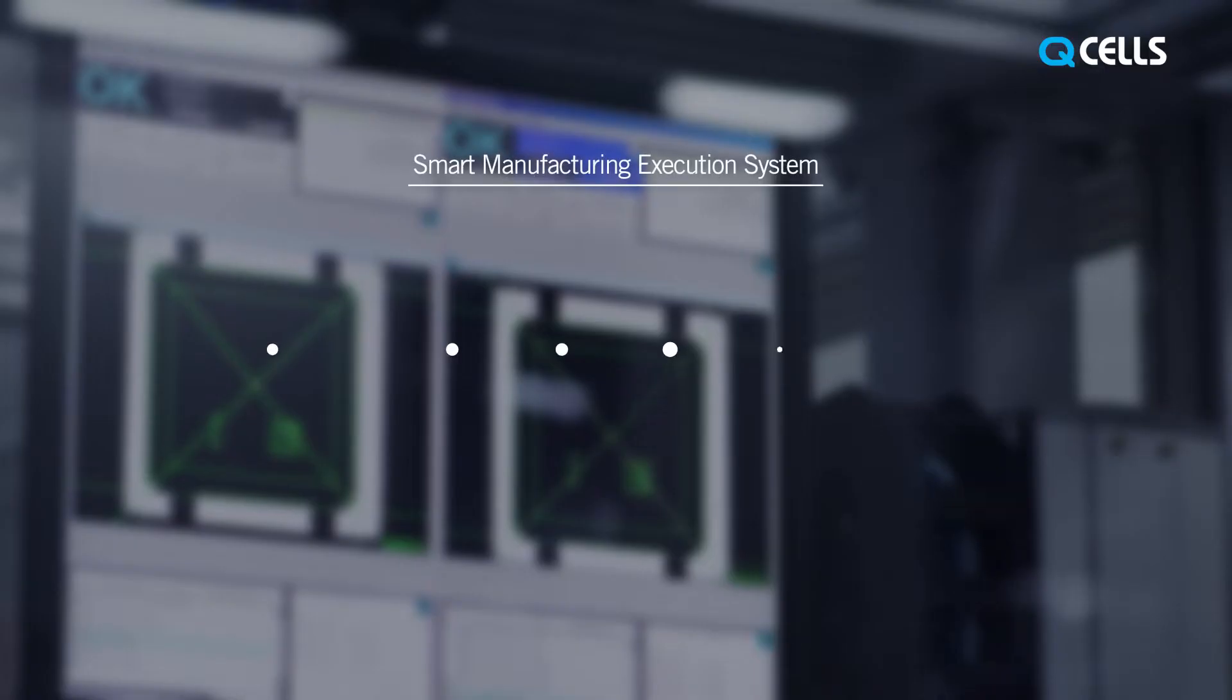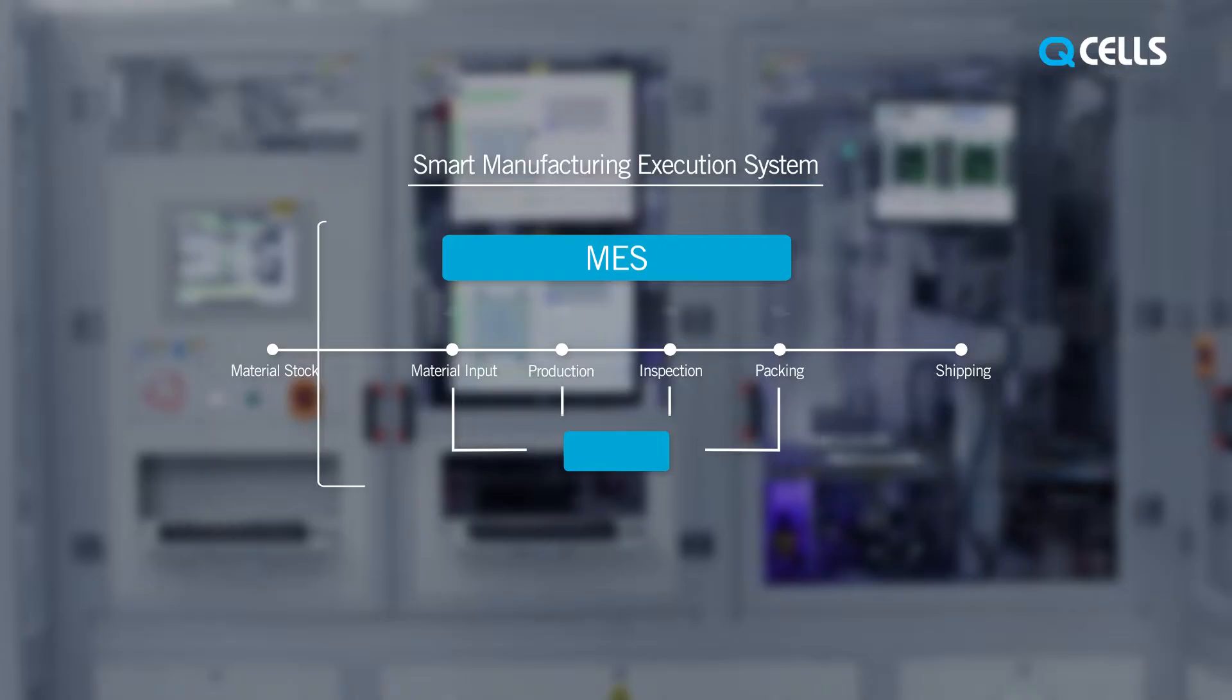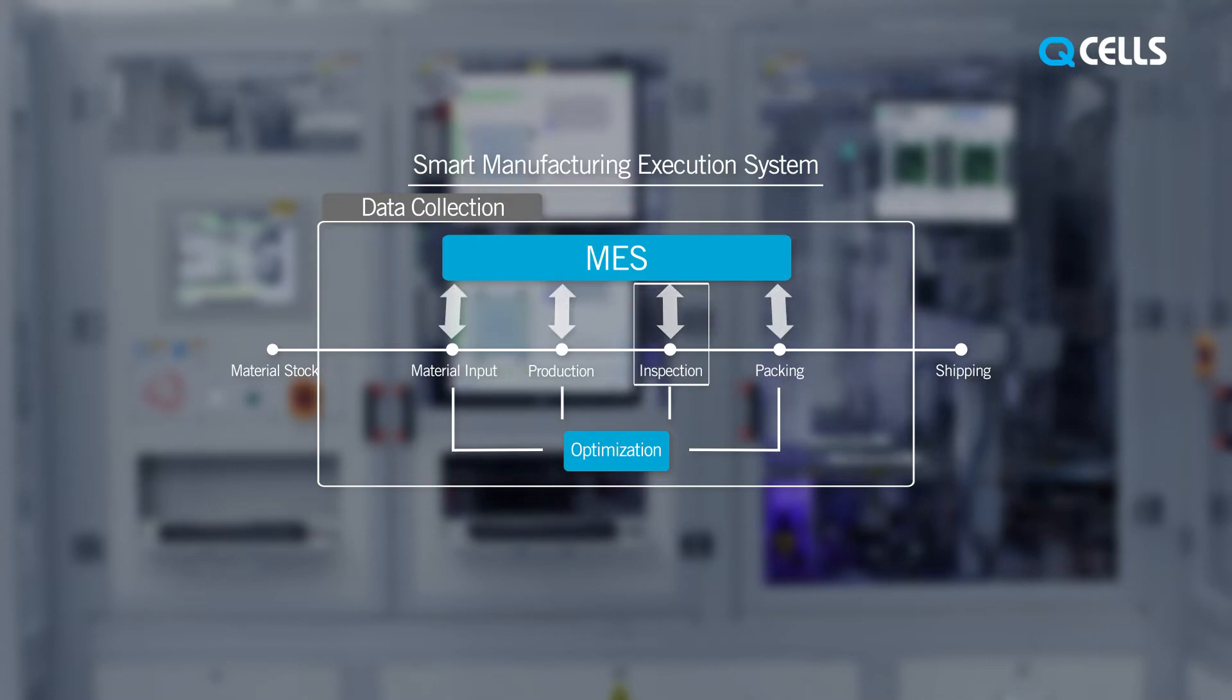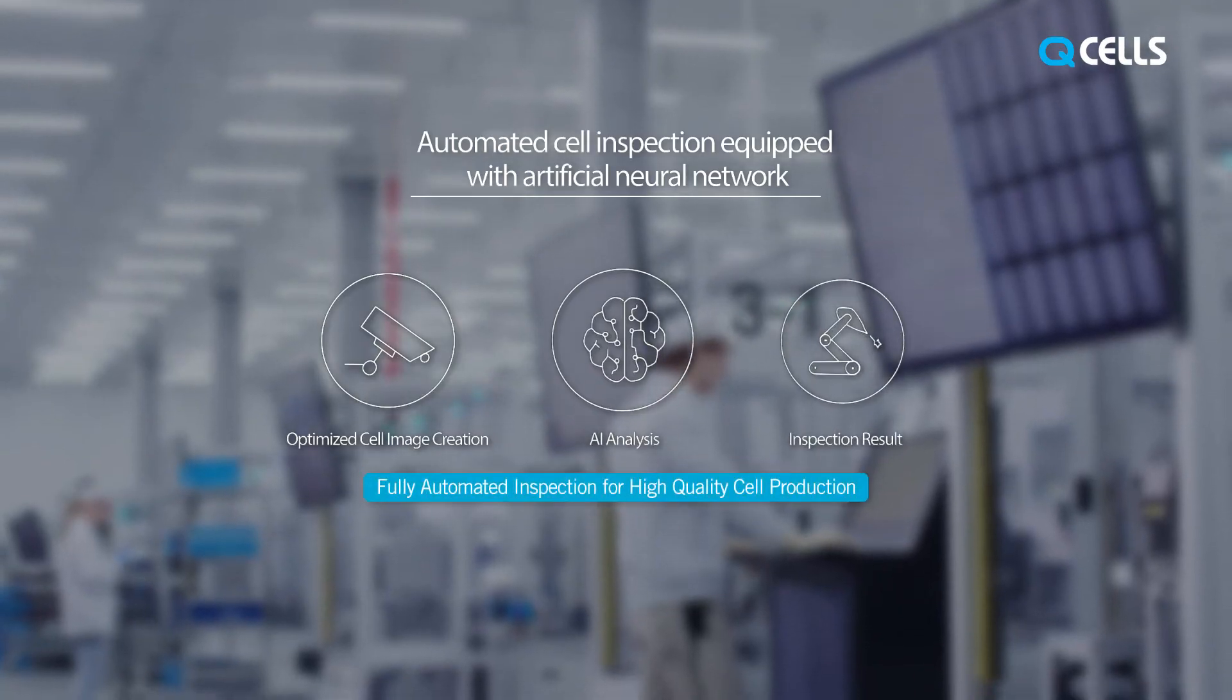The big data collected by TRAC-U and the deep learning capability of our artificial neural network help us to ensure the overall quality of each solar cell produced at our Jinchun facility.